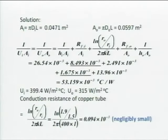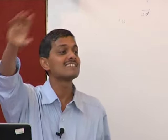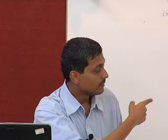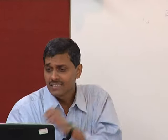Through this problem, I want to show h_i·A_i, h_o·A_o, and the conductive resistance. I have taken a stainless steel tube with k = 15. If I change to copper, k goes up to 400 and the conductive resistance becomes one order less — here it is 9×10⁻³, and with copper it becomes 0.01×10⁻³. That is why in refrigeration all condensers and evaporators are made of copper tubes. Material selection is the biggest issue in heat exchanger design.